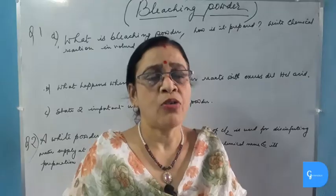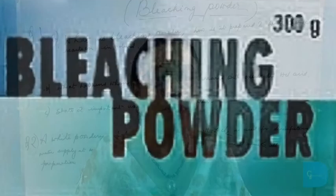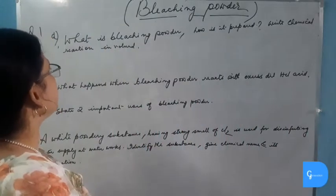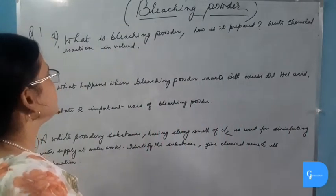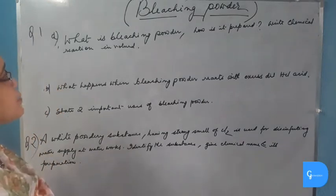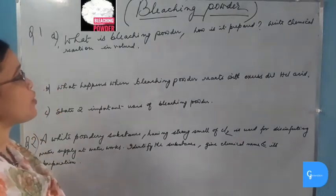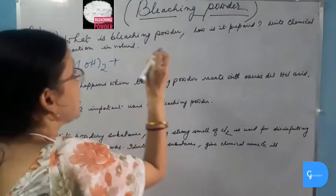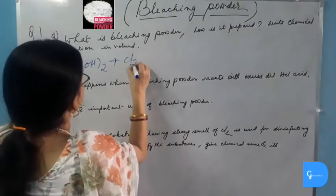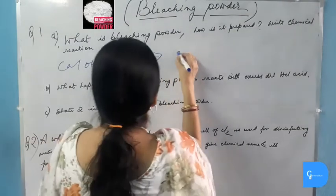Now let's see the question which has come from bleaching powder. What is bleaching powder? How is it prepared? The chemical name of bleaching powder is calcium oxychloride. It is also known as chloride of lime. It is prepared when chlorine gas is passed through dry slaked lime.